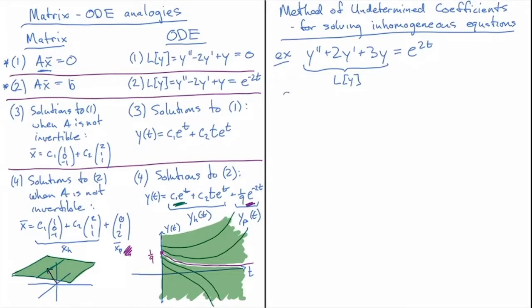So what I want to do first in step one of the method of undetermined coefficients is solve Ly = 0. That's going to get me the c1 and c2 solutions that we had in this analogy that we drew out.